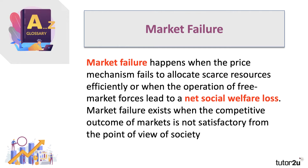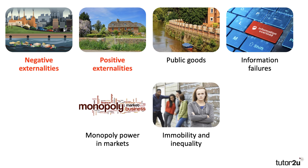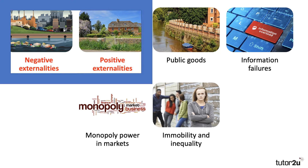Market failure occurs when the outcome of market activity between producers and consumers is not satisfactory from the point of view of society. The main role of prices is to allocate resources efficiently, but market failure exists when the competitive outcome of markets is not efficient or equitable. There are lots of potential causes of market failure — public goods, information gaps, market power, monopoly power, immobility, and inequality — but in this series we focus on externalities: the economics of external costs and benefits.